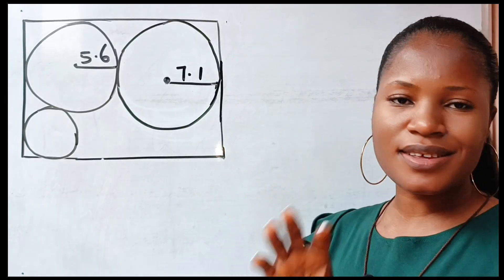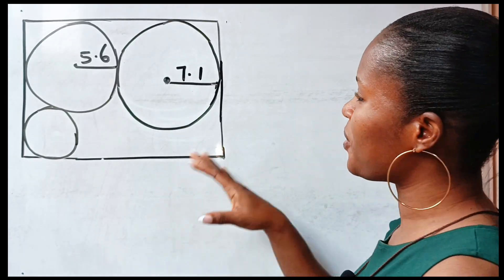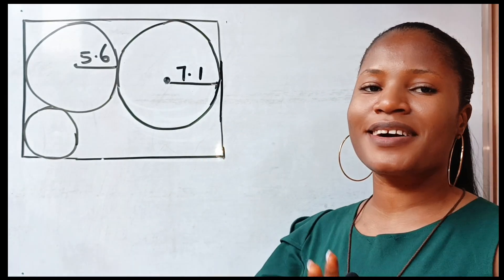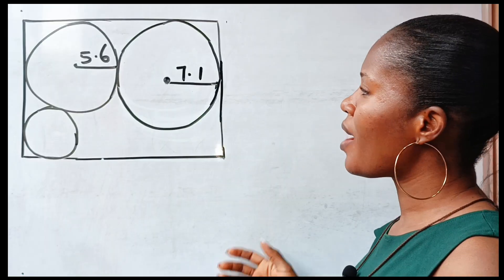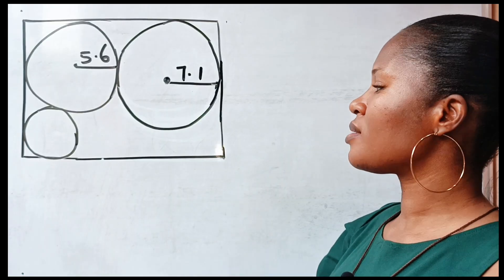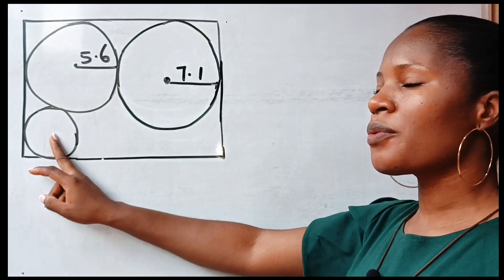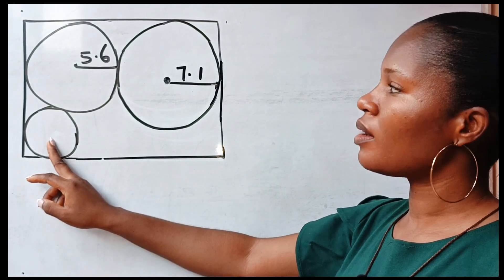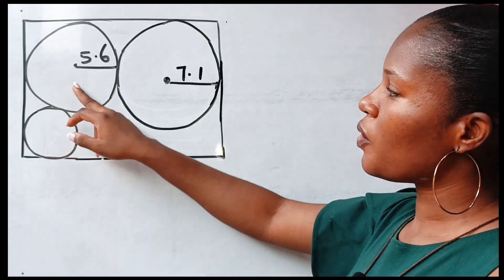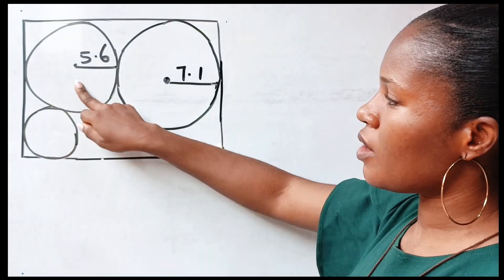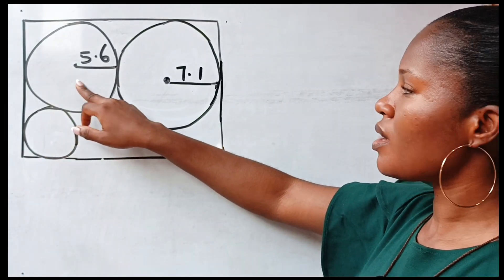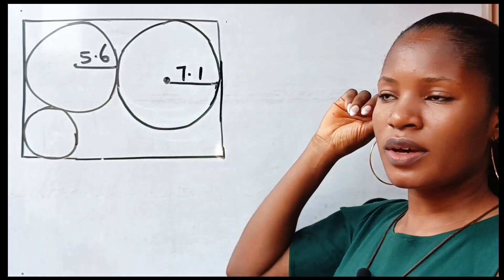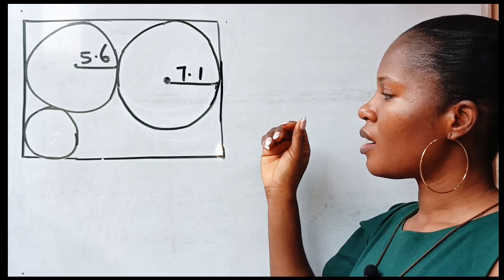We have an interesting geometry question to solve. Welcome back to my channel. Today we are asked to find the area of this particular circle. If the radius of this circle is 5.6 units and the radius of this circle is 7.1 units.